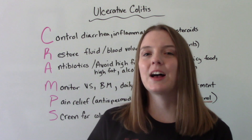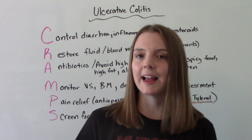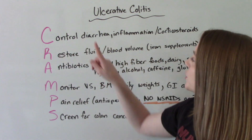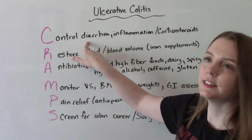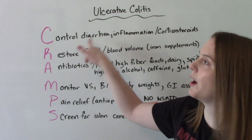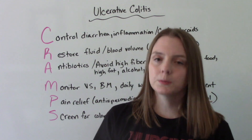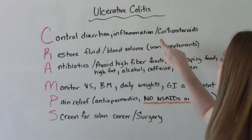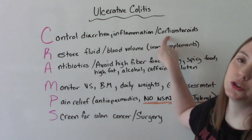A mnemonic device to help you remember nursing interventions for ulcerative colitis is CRAMPS. C stands for controlling diarrhea and inflammation — we'll use anti-diarrheals and anti-inflammatories as first-line medications. Sometimes when the body doesn't respond well to those, we might also use corticosteroids, but remember this is not a long-term medication — it's only for a short amount of time.